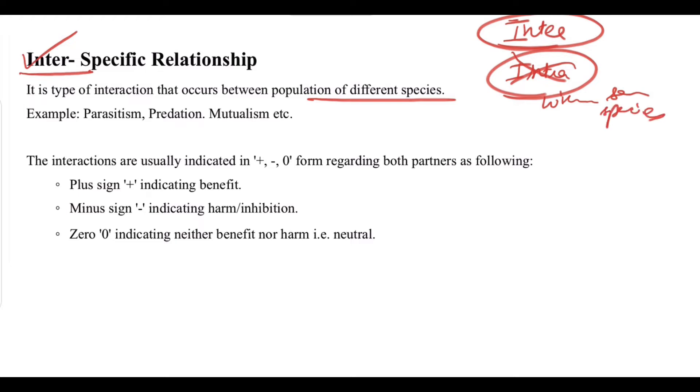Interspecific relationship means type of interaction that occurs between populations of different species. Examples include parasitism, predation, mutualism, etc. The interactions are usually indicated by positive, negative, or zero form regarding both partners as follows: plus sign indicating benefit, minus sign indicating harm or inhibition, zero indicating neither benefit nor harm, that is neutral.